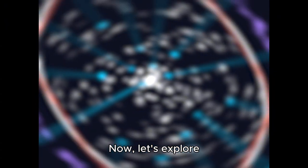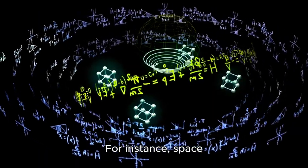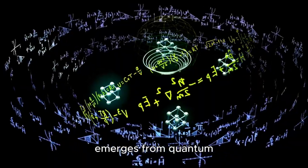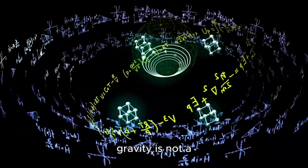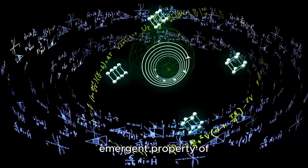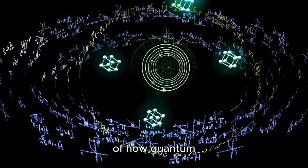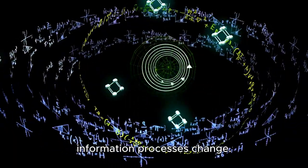Now, let's explore some of the implications of this theory. For instance, space emerges from quantum entanglement patterns. Gravity is not a fundamental force but an emergent property of information flow, and time is not an absolute dimension but a result of how quantum information processes change.